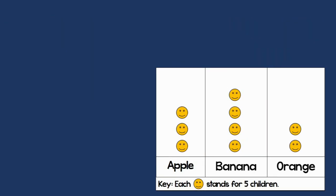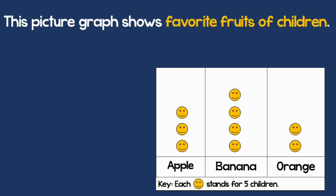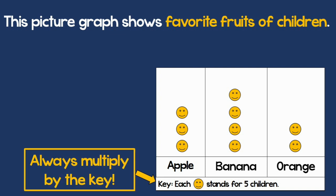Now let's try a different example with a different key. This picture shows the favorite fruits of some children. Before all, look at the key. Each smiley face stands for 5 children. Remember, always multiply by the key.